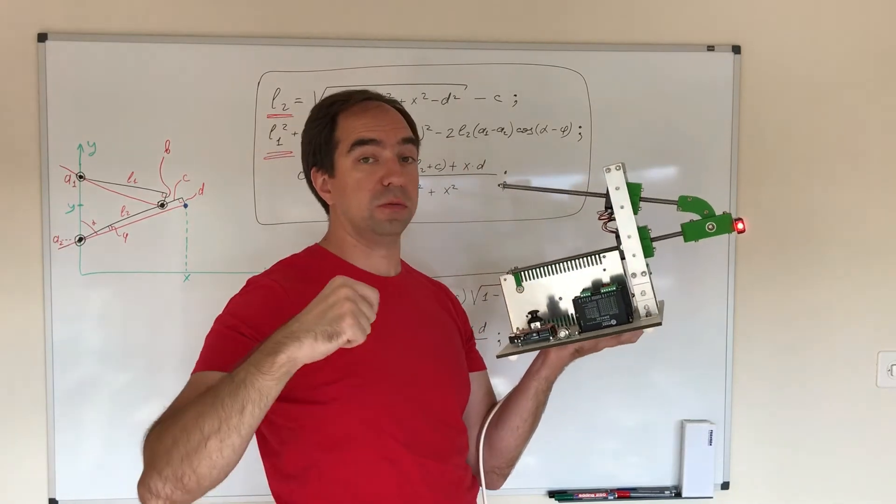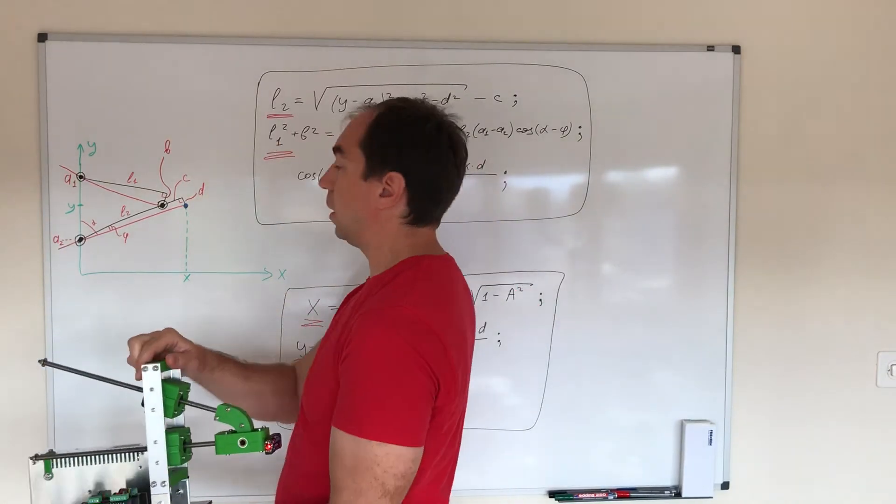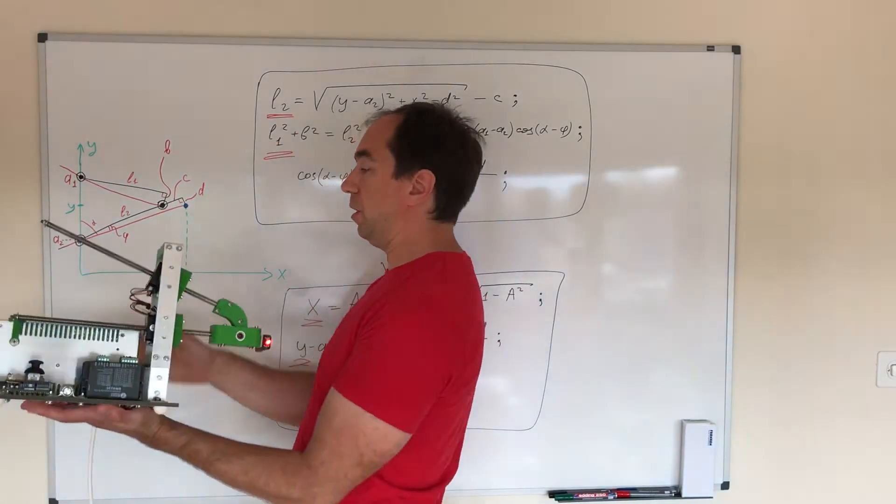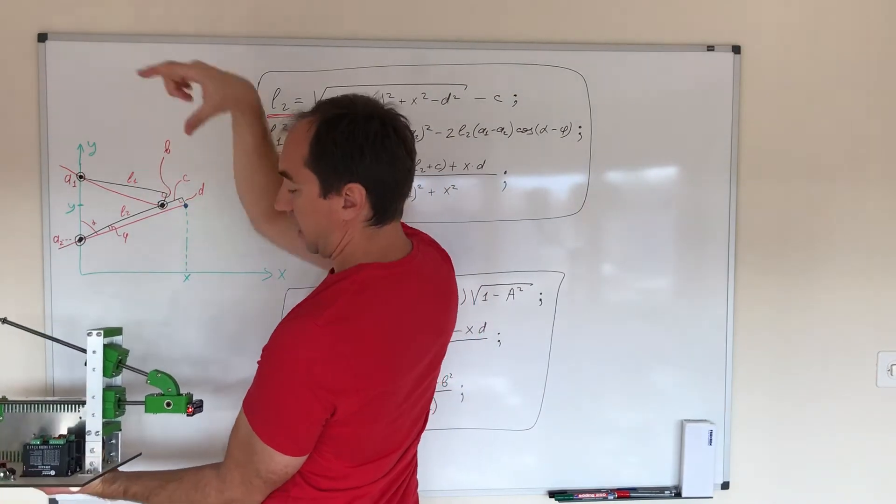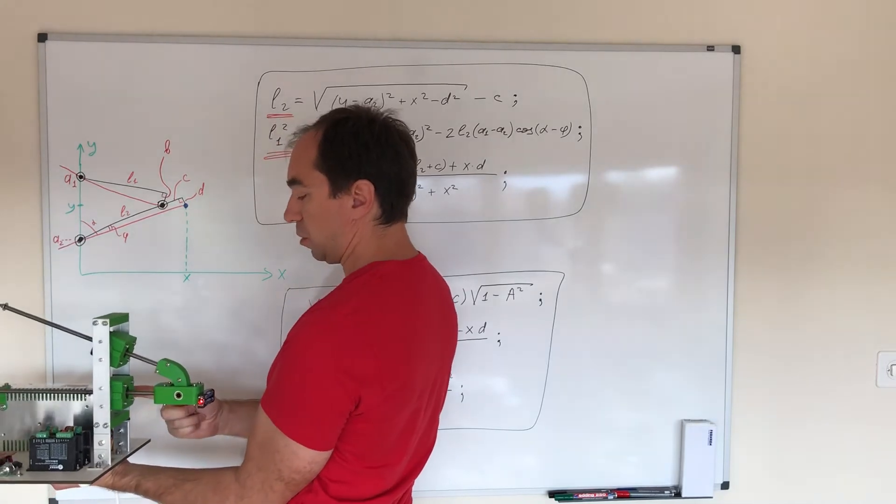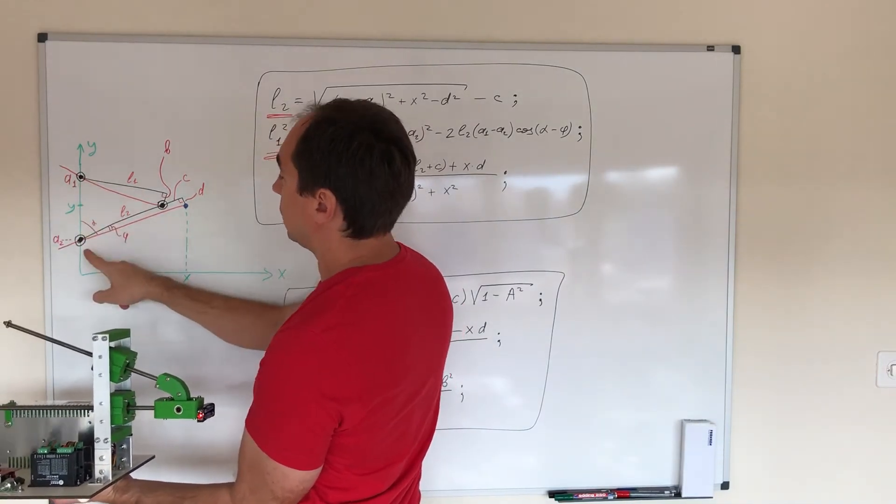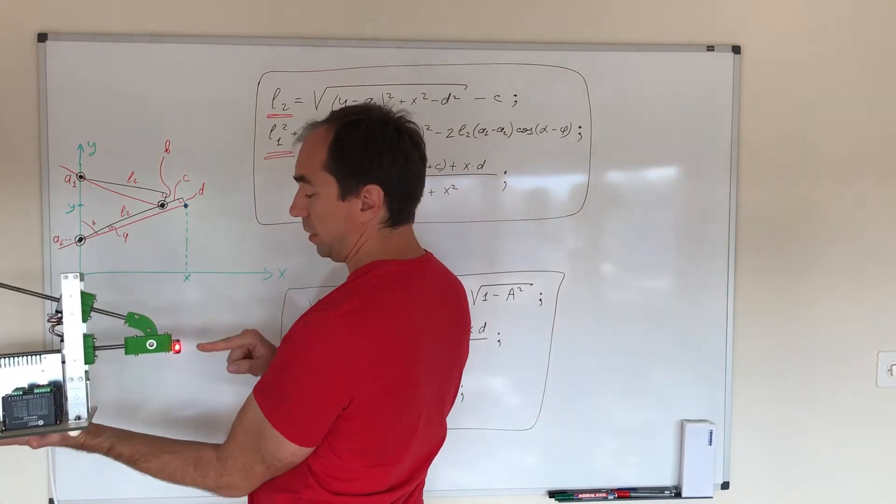Now a little bit of theory. This is the schematics of this robot. This black line is this part of the threaded rod, this black line is this part of the threaded rod. This is one motor, this is another motor. This is a pivot point in the joint, and the blue dot is our LED.